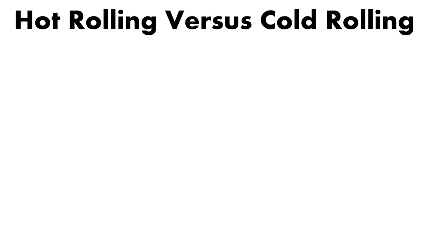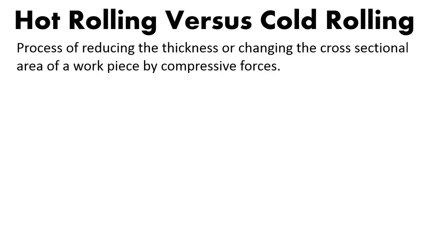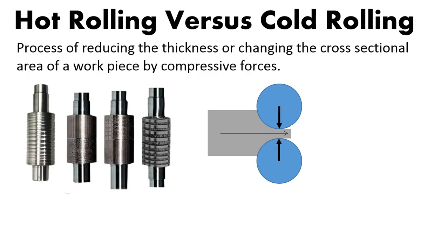What is the difference between hot rolling and cold rolling? Let's start with the general definition of rolling processes, because hot rolling and cold rolling do have a lot in common. The process involves reducing the thickness or changing the cross-sectional area of a workpiece by compressive forces. They both use rollers to roll a piece of metal using high compressive forces, and on the other side you end up with a reshaped part of different thickness and cross-sectional area.